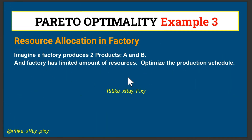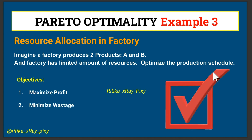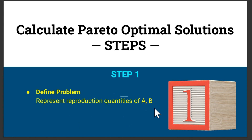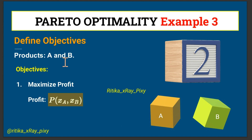Another example: suppose we are allocating resources in a factory that produces two products A and V, with a limited amount of resources like labor and materials. We want to optimize the production schedule with two goals: maximize profit from selling products and minimize environmental impact measured by the amount of waste produced. We represent production quantities as xA for product A and xV for product V.